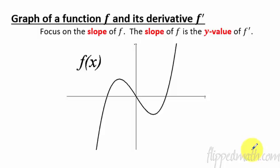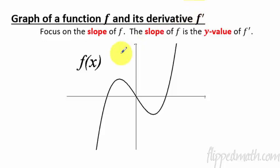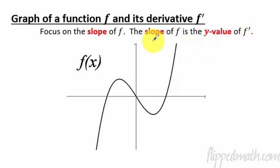This is actually one of my favorite things in all of calculus. It is a little bit challenging for some people, so really try and listen. We're going to relate the graphs of a function f and its derivative f prime — looking at the graphs of both the function and the graph of the derivative. The slope of f is the y value of f prime. Let me say that again: the slope of f is the y value of f prime.